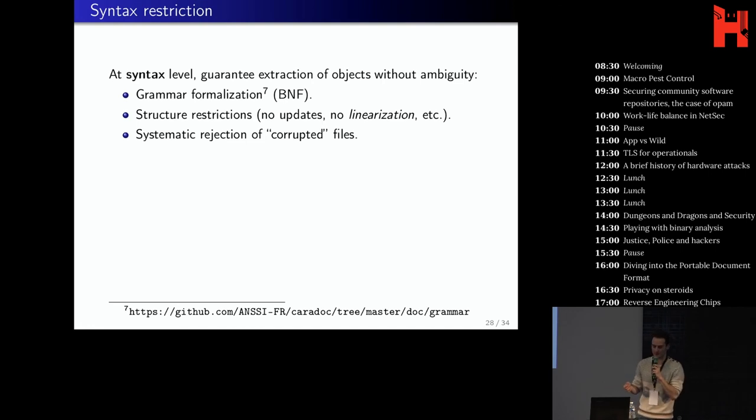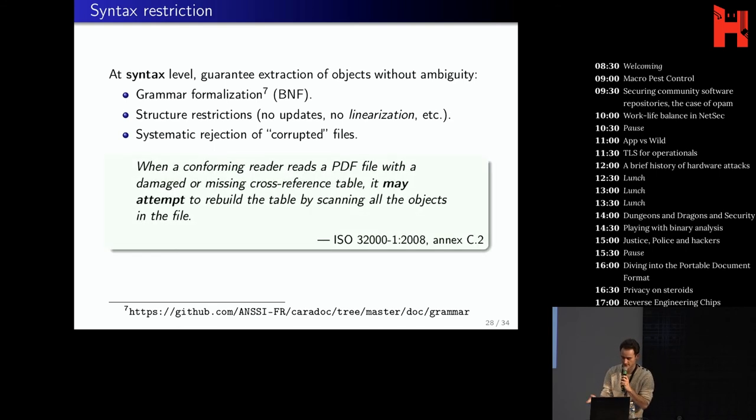So I mentioned we did some syntax restriction. Because we want to guarantee that the extraction of objects is without ambiguity to avoid the polymorphism problem. So we formalized the grammar. We restricted the structure. So we don't want updates or linearization. And we systematically reject corrupted files, contrary to what the specification says. So in the spec, they say, when a conforming reader reads a PDF file with a damaged or missing cross-reference table, it may attempt to rebuild the table by scanning all the objects in the file. And the problem is some reader may implement it. Some readers may not. And then you have polymorphism. So we really want to avoid that.